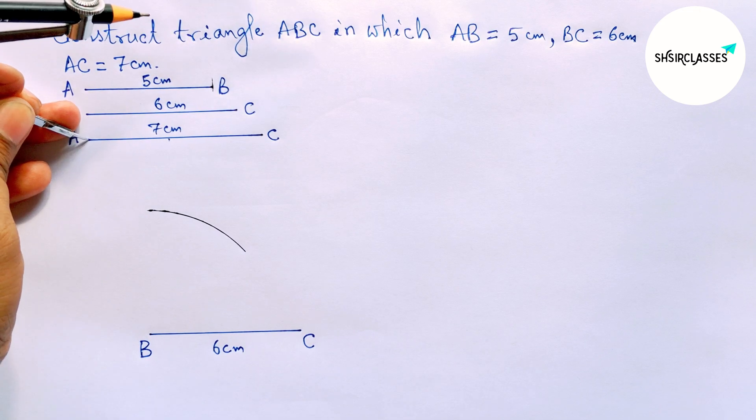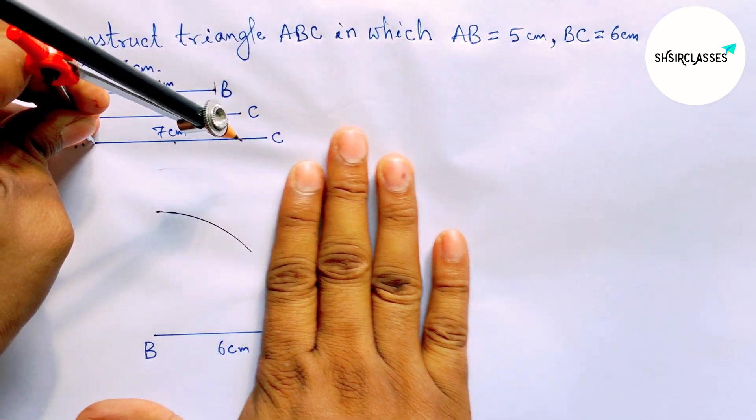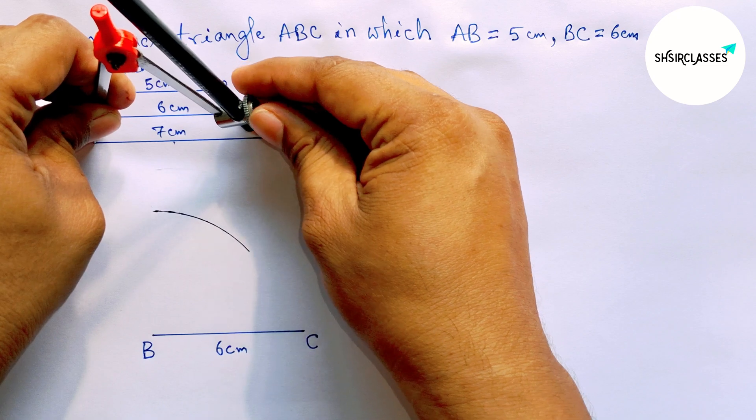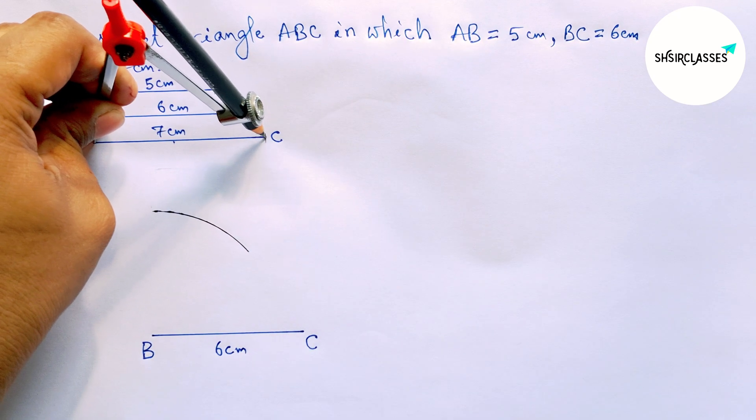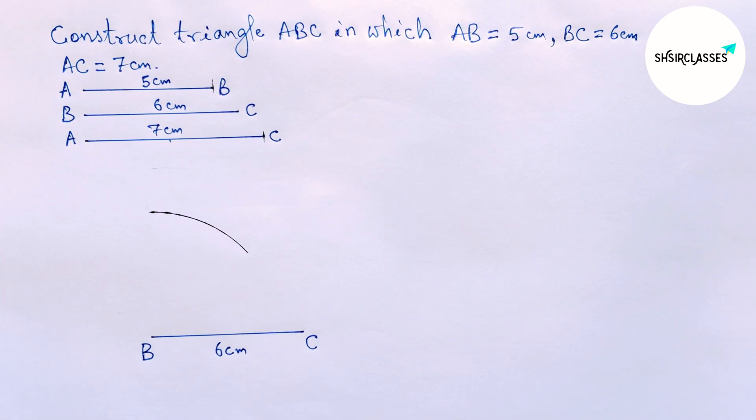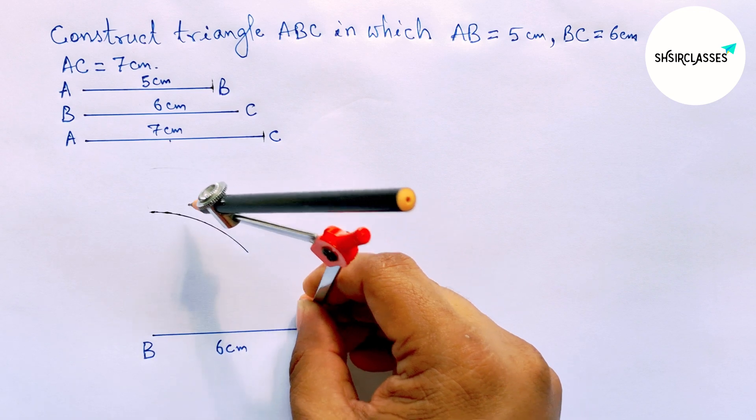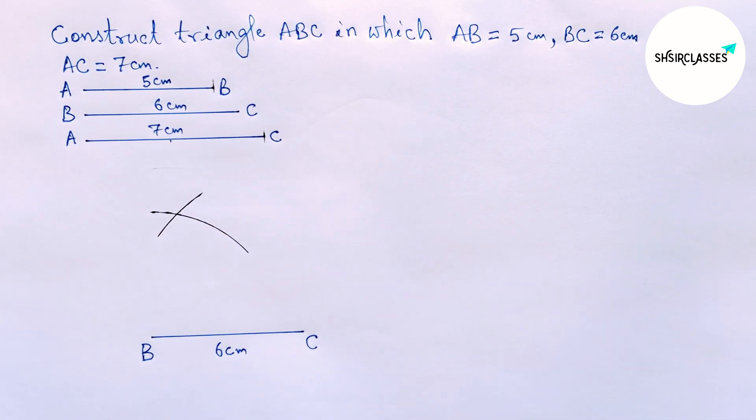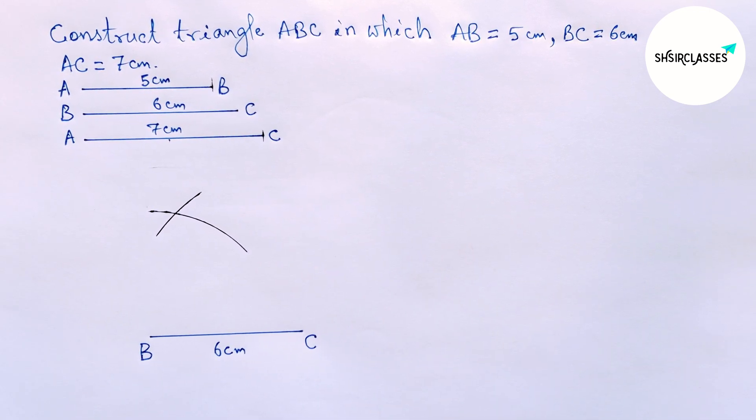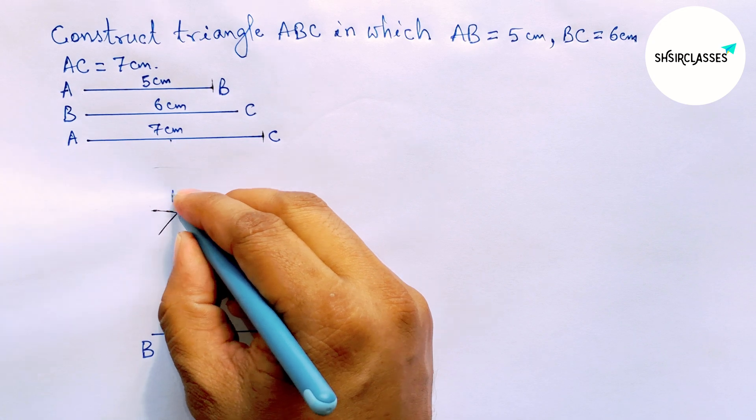Now taking the length AC equals 7 centimeters with the help of compass by this way. So this is perfect. Now putting the compass on point C and cut here, so the arcs meet at a point. So taking here point A.